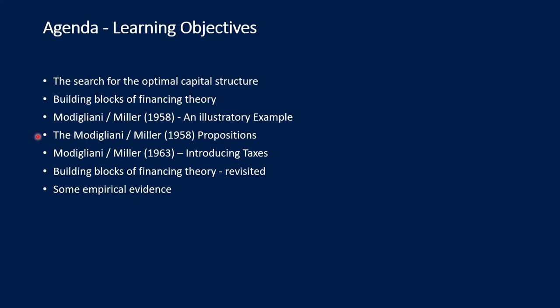From this example I would like to deduce the Modigliani-Miller propositions. In 1963, Modigliani and Miller changed their mind and introduced taxes into their theory — I would like to show that too. And last but not least, I have to revisit those building blocks and show some empirical evidence on Modigliani-Miller theory.